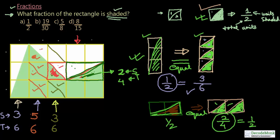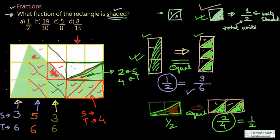Similarly, for the next portion: total 4 units and shaded units is also 4 — all shaded. For the remaining part, shaded portion is 0 and total portion is 4 — none shaded.